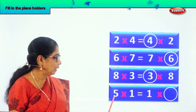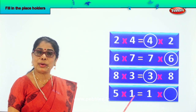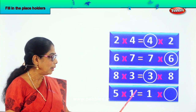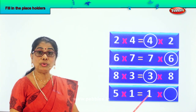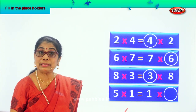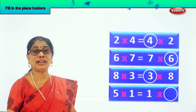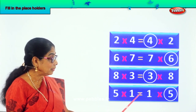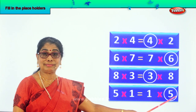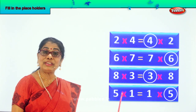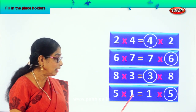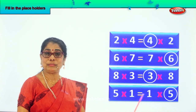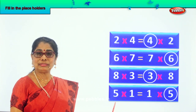Now look at this. 5 into 1. 5 into 1 is 5 itself. 5 into 1 is equal to 1 into what? You must get the same answer. 5. So 5 into 1 is equal to 1 into 5. We have reversed. 5 into 1 is equal to 1 into 5. Both are same.